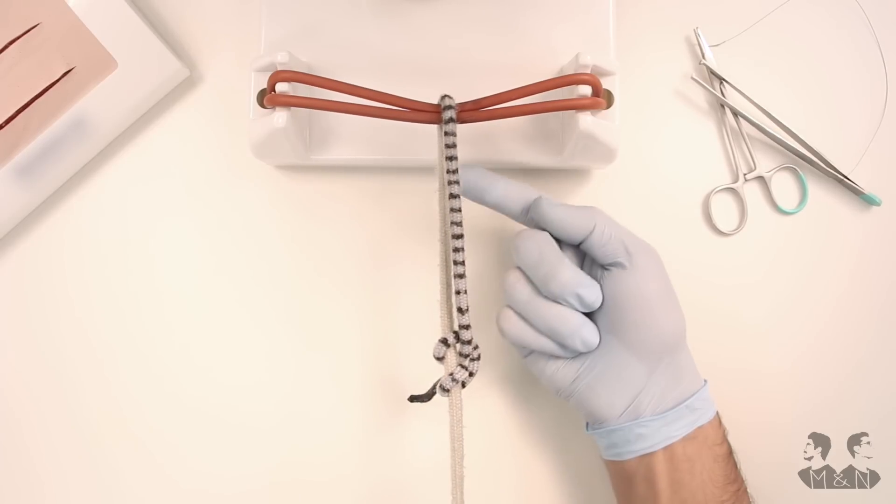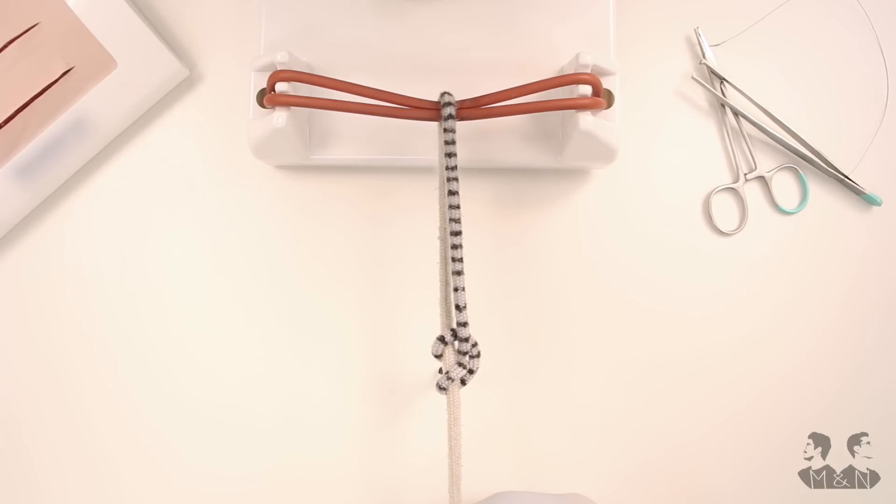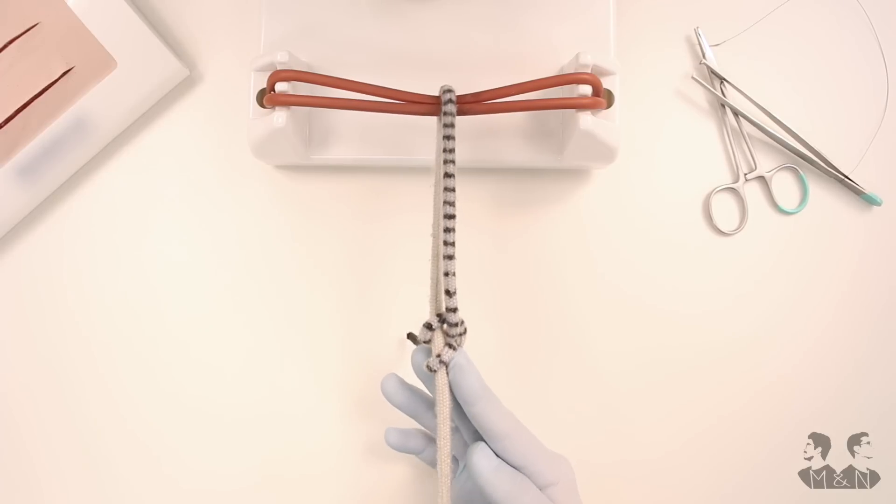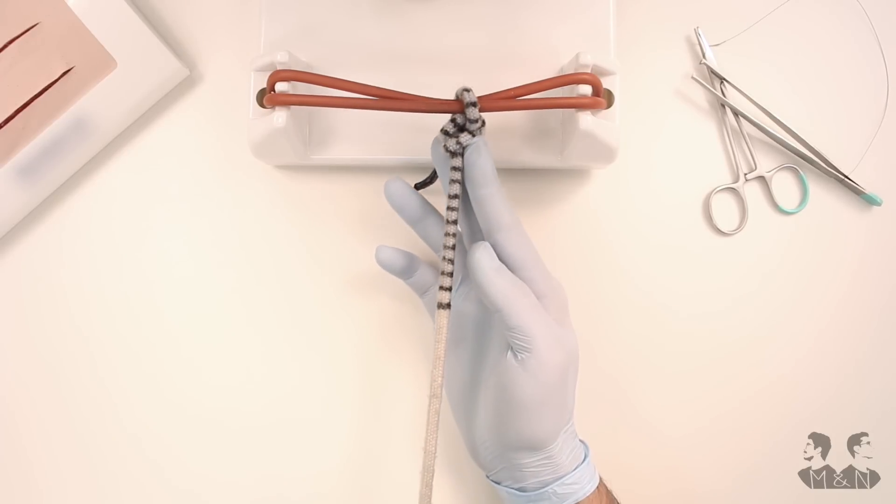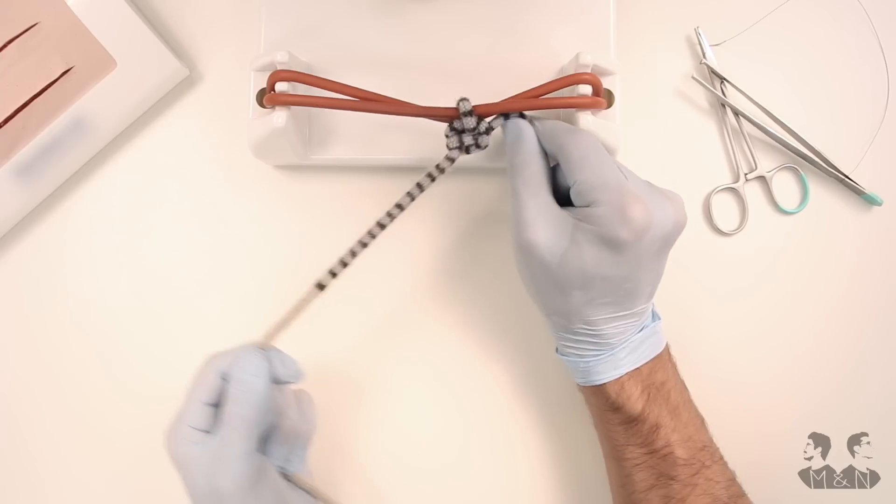By examining the knot you can see that the wide end draws a continuous line through the knot. This is why it is possible to push the knot into the depth of the wound and fix it there. After that you would lock it into position by at least one square knot.